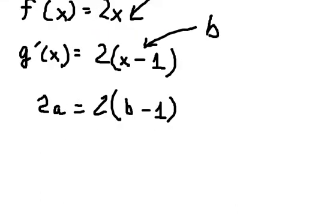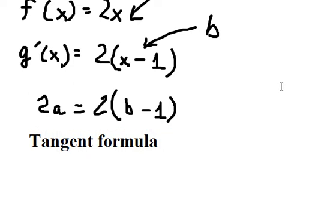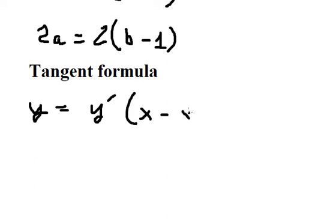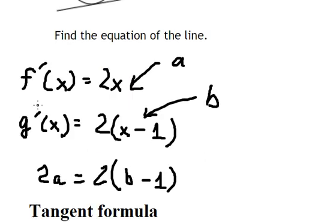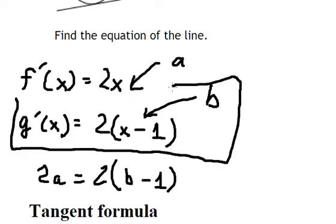The next step is about the tangent formula. We have y equals the first derivative evaluated at x₀, times (x minus x₀), plus y₀. Because we have the same tangent line for both functions, these two expressions should be equal.